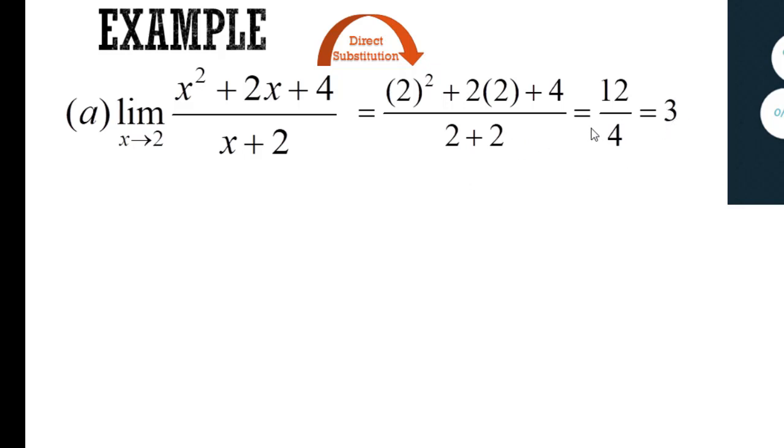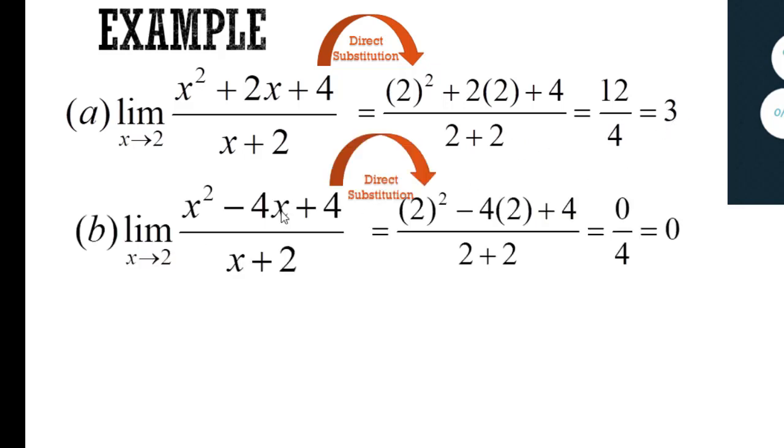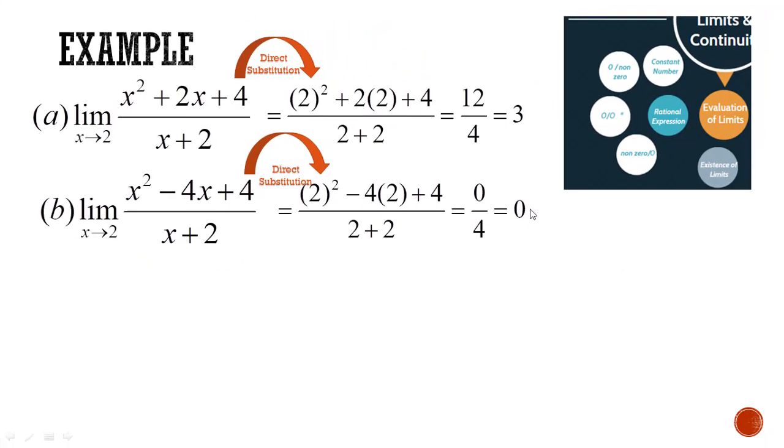B, after the direct substitution, numerator with the 0 but the denominator with a 4. Logically, 0 over 4 or 0 over any constant number, the answer must always be 0.